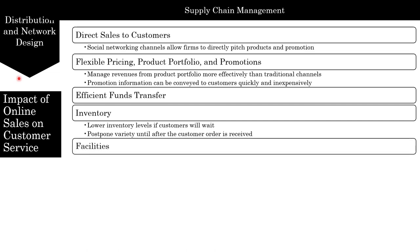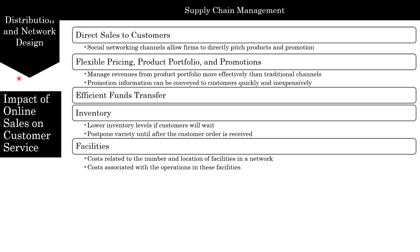When it comes to facilities, there are two basic types of facility costs: costs related to the number and location of facilities in a network, and costs associated with operations that take place in these facilities. A company selling online can reduce network facility costs by centralizing operations, thereby decreasing the number of facilities required. Netflix, for example, is able to satisfy demand for DVD rentals from about 50 warehouses, whereas Blockbuster needed thousands of retail outlets to serve its customers.